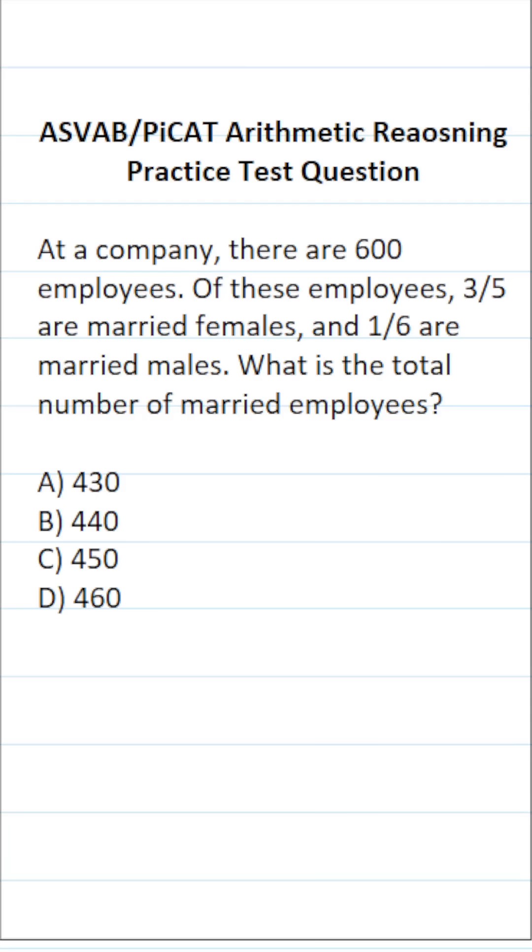This arithmetic reasoning practice test question for the ASVAB and PiCAT says, at a company there are 600 employees. Of these employees, three-fifths are married females and one-sixth are married males. What is the total number of married employees?